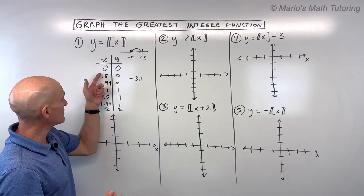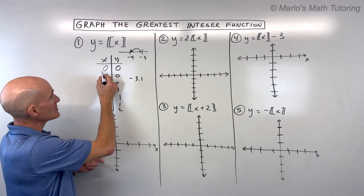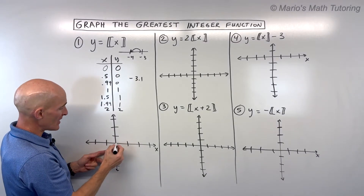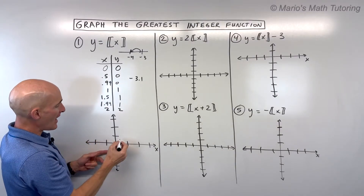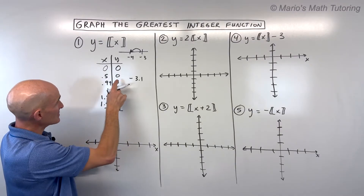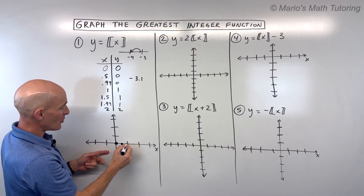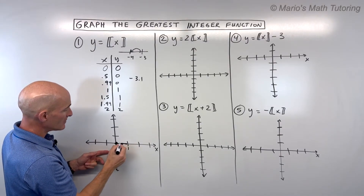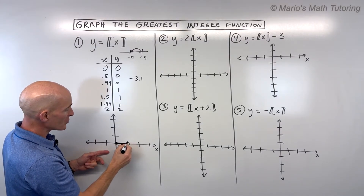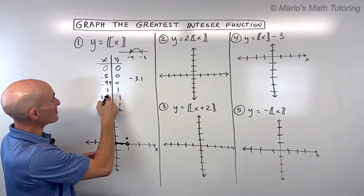The greatest integer function is also sometimes referred to as the step function, and you'll see why when we graph these points. So 0 maps to 0 — that's right at the origin. 0.5 maps to 0, so you're right here. 0.99 maps to 0. As soon as you get to 1, there's an open circle and it jumps up to the next step or stair.